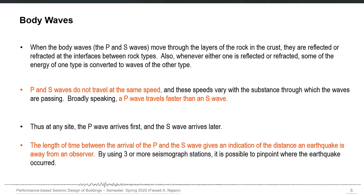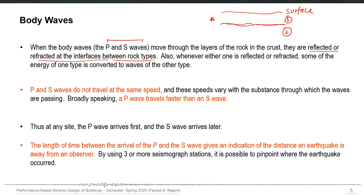When body waves — P and S waves — move through the layers of rock in the crust, they are reflected or refracted at the interfaces between rock types. If there is an interface between one rock type and a second, some part of the wave will reflect back while some will refract into the second rock type. Whenever either reflection or refraction occurs, some of the energy of one type is converted to waves of the other type — the wave may change from one type to another.